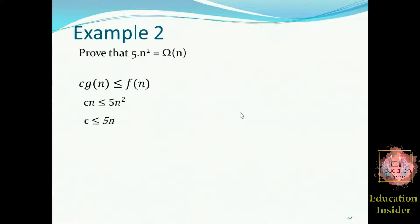Now again we need to prove the lower bound of function 5n square. First, let's assume the inequality for Big Omega. After populating g(n) and f(n), we get something like this. Now let's cut out the n by dividing n on both sides.